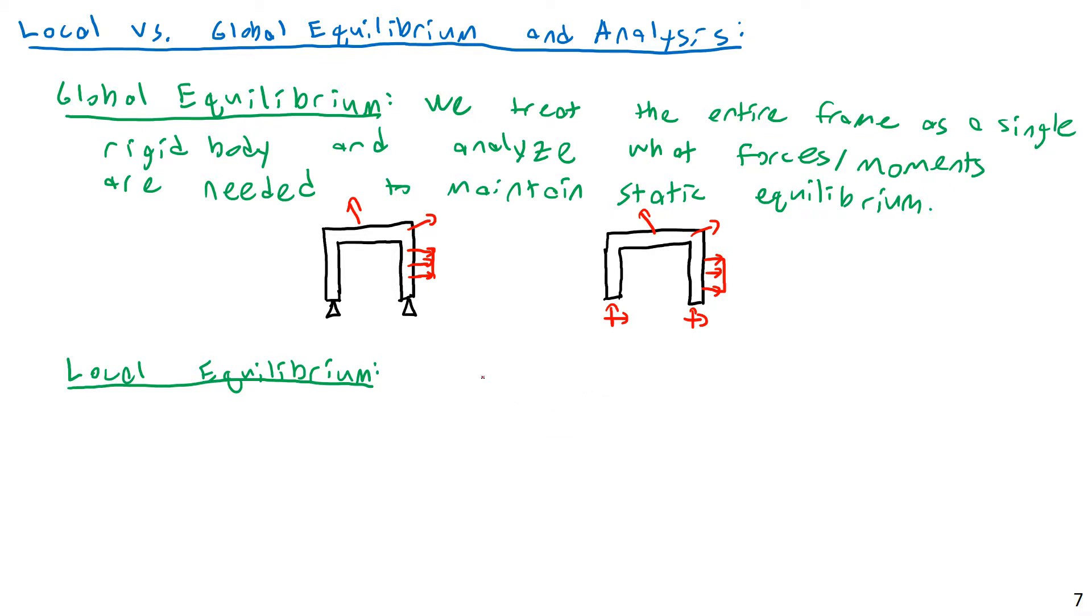We're saying, let's just treat this thing as a single rigid body, just like we have done previously when we look at trusses. We said, let's say that the frame or the truss is one big object. One big dumb object. We'll ignore that it's actually made of members, and let's say, what kind of forces are needed to keep this entire thing in equilibrium? Local equilibrium is the exact opposite, or local analysis is the exact opposite.